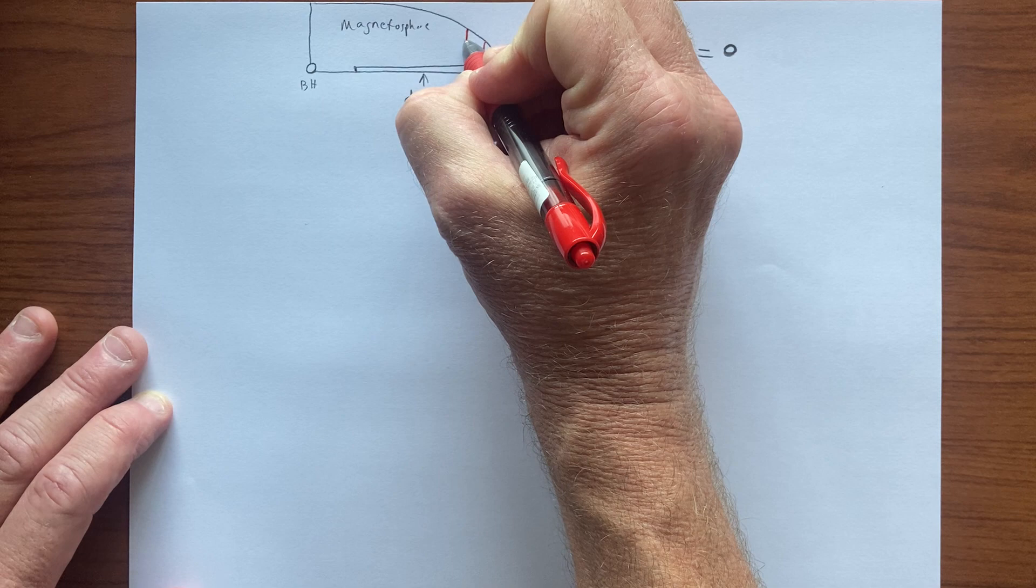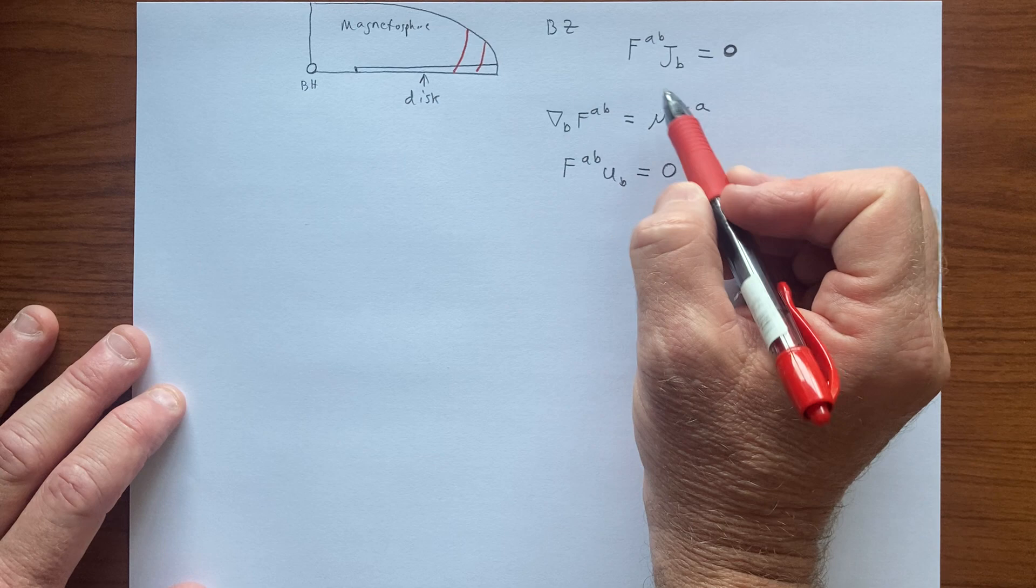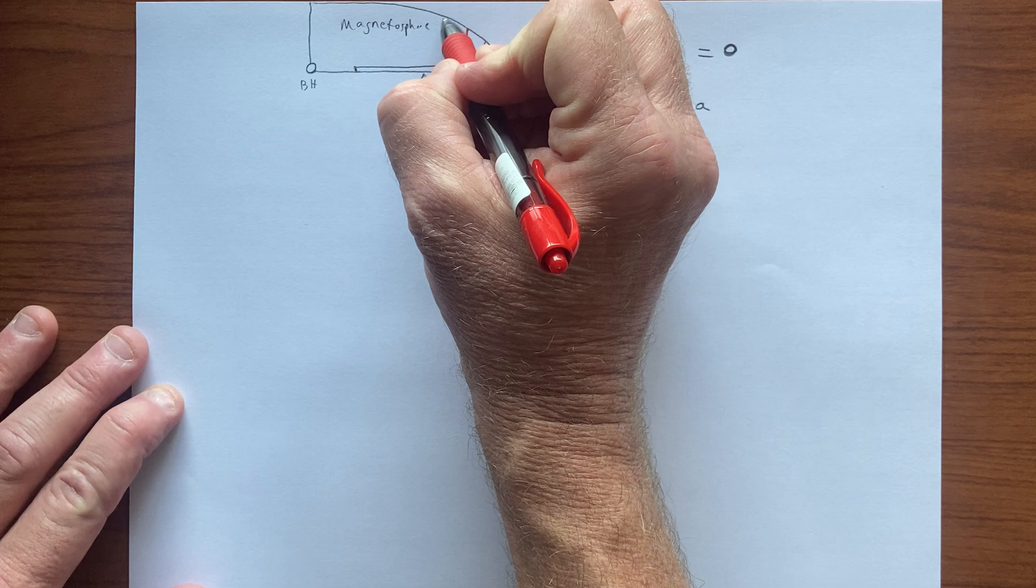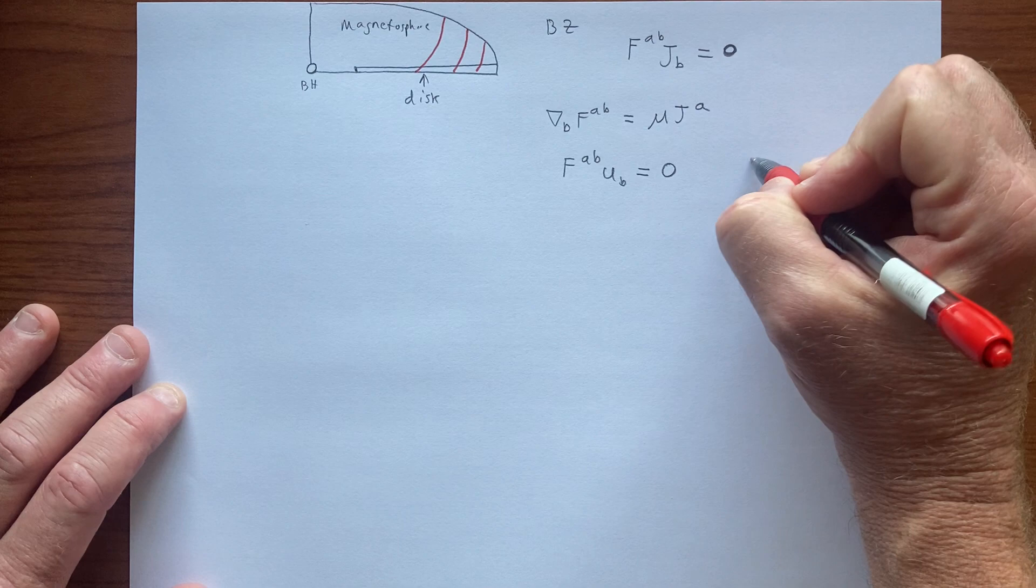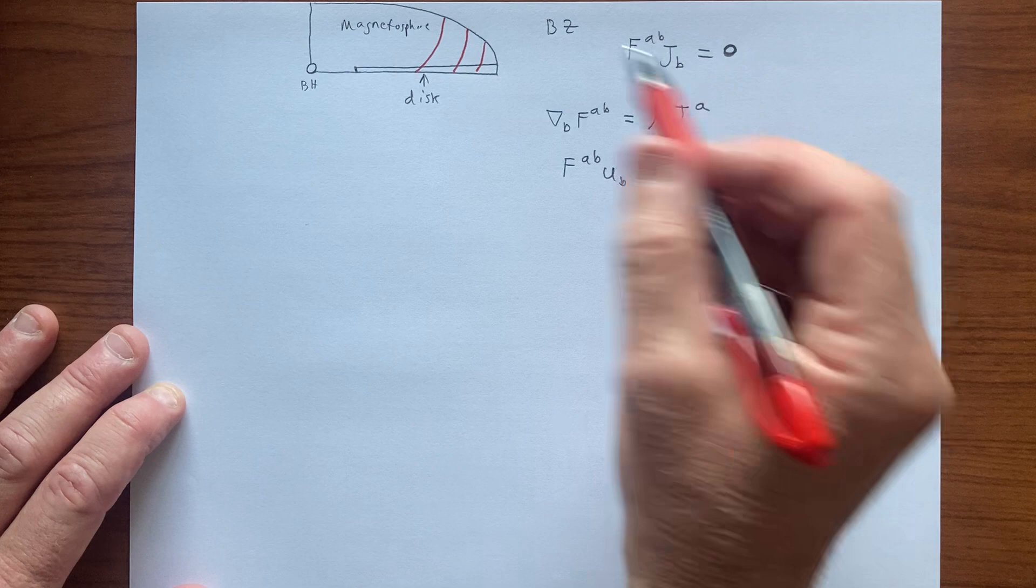The equation that we wrote before for the disk involves the dragging versus the diffusion equation. The term with eta involves a competition of dragging and diffusion, and so we end up doing something like this.